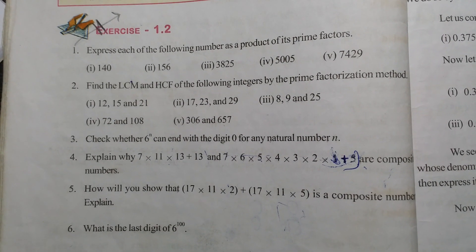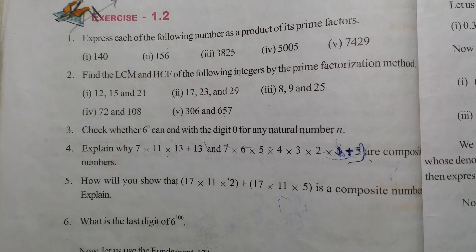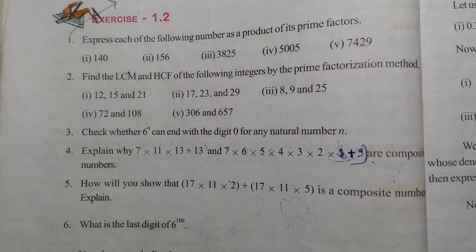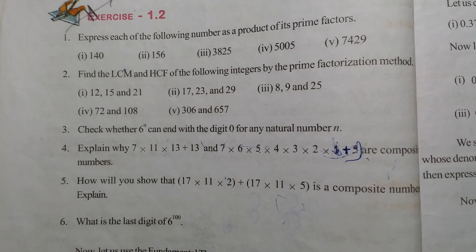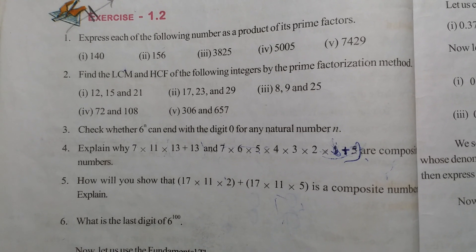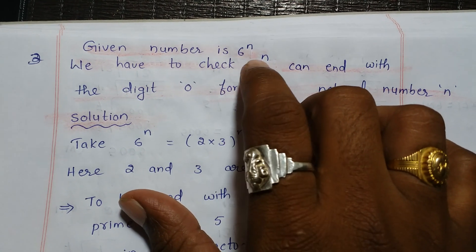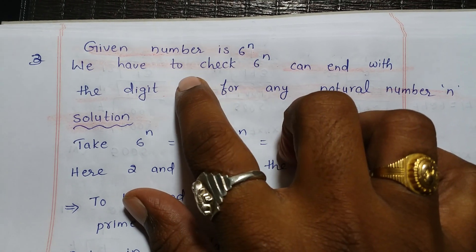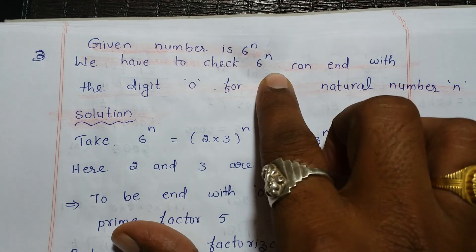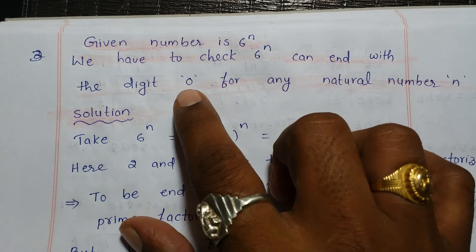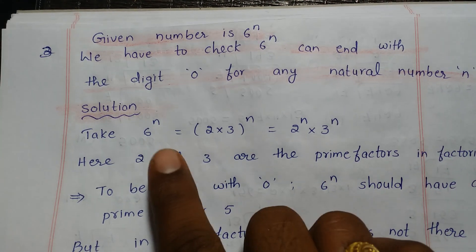Real Numbers, Exercise 1.2, Question 3: Check whether 6 to the power of n can end with the digit 0 for any natural number n. So the given number is 6 to the power of n, and we have to check whether 6 to the power of n can end with the digit 0 for any natural number n.